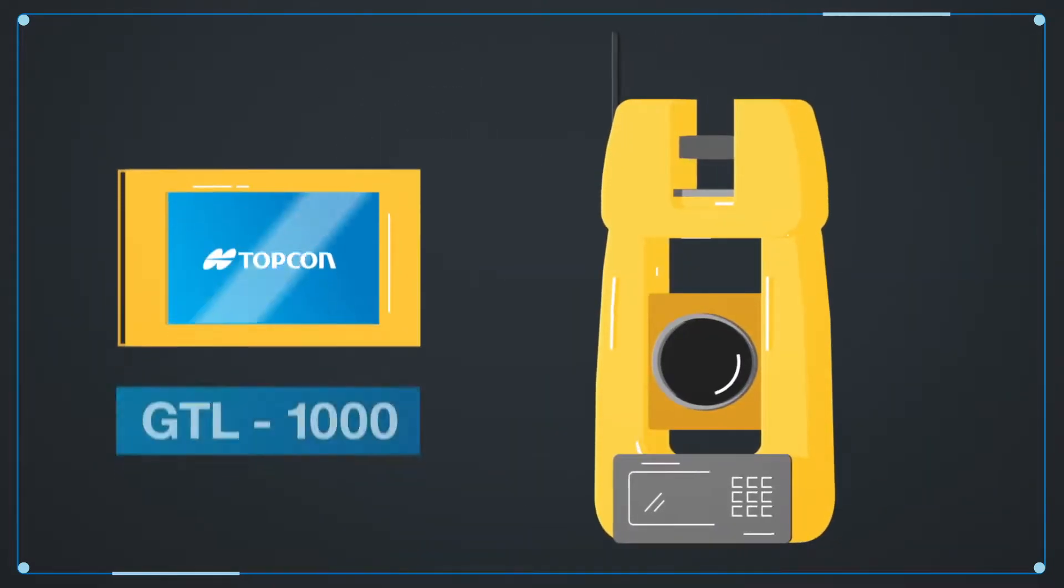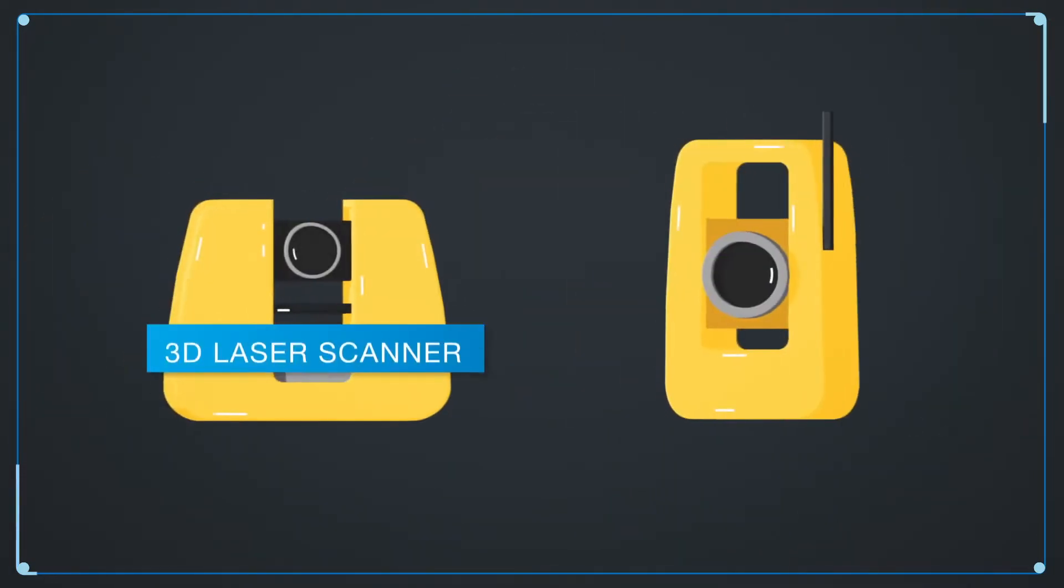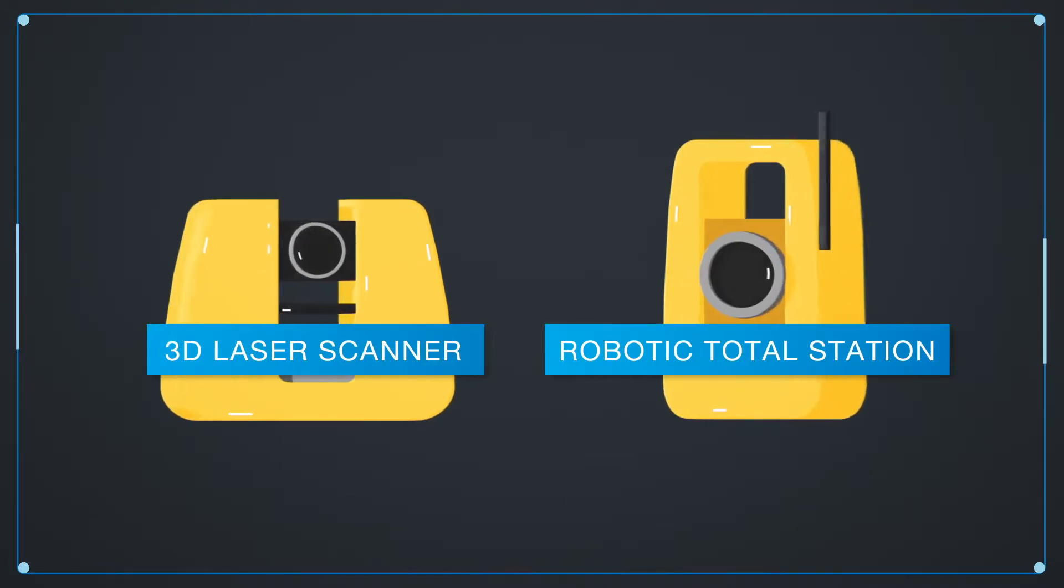Topcon recognized this problem and responded with the GTL instrument. The GTL instrument uses the digital layout capabilities of a one-man robotic total station with the power of a 3D laser scanner.